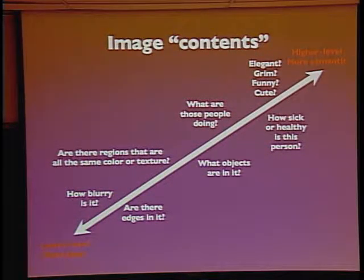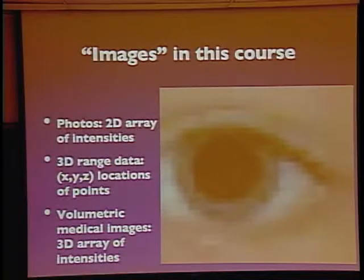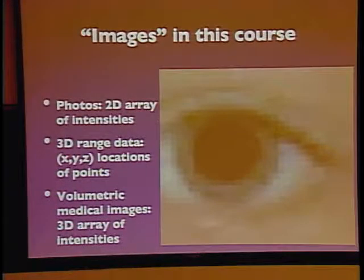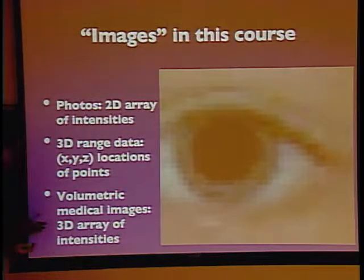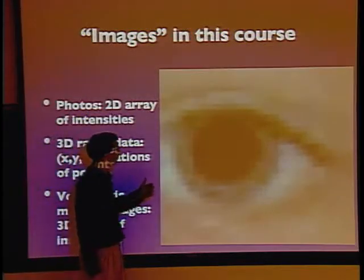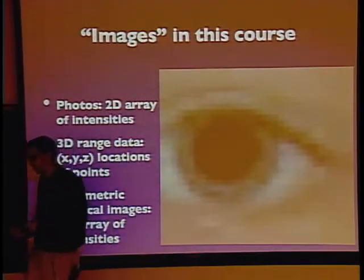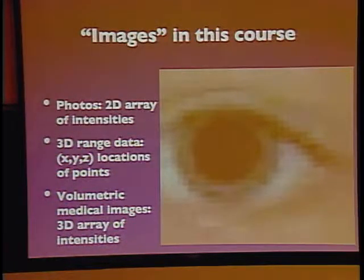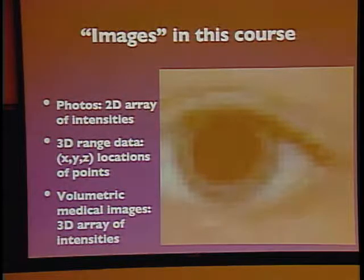This course is broken up into three modules corresponding to three different types of imaging data. The first is what you're all familiar with: photographs — two-dimensional arrays of image intensities, where each pixel either has a corresponding red, green, and blue value, or just an intensity for black and white images. These will comprise the first three weeks of the course and the first programming project.